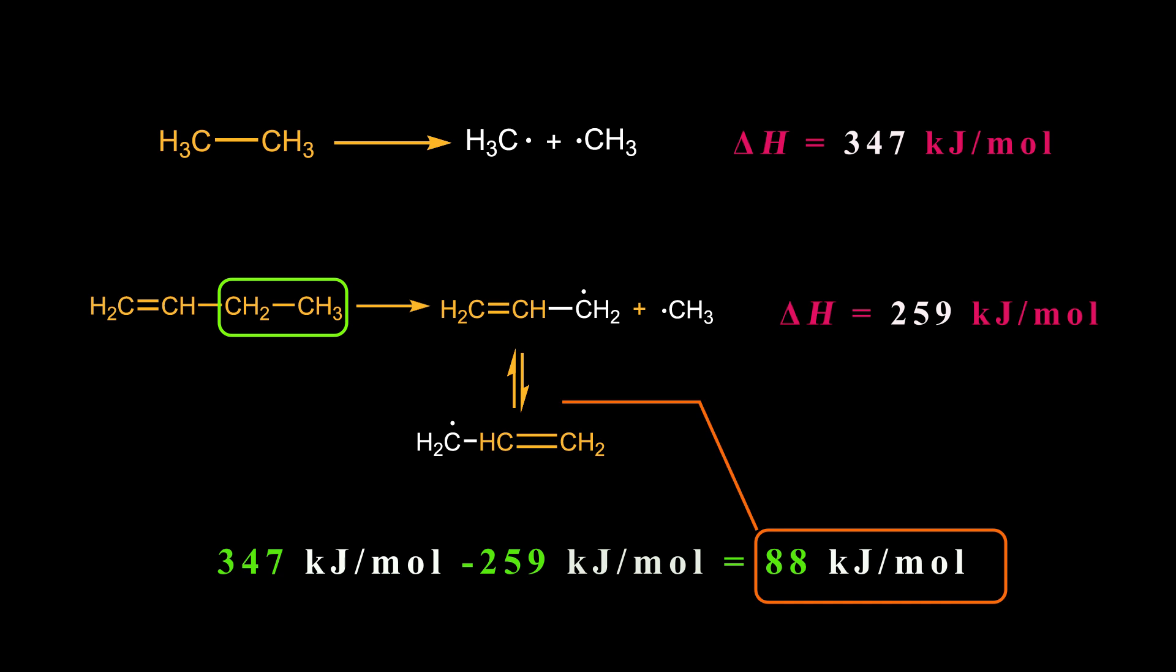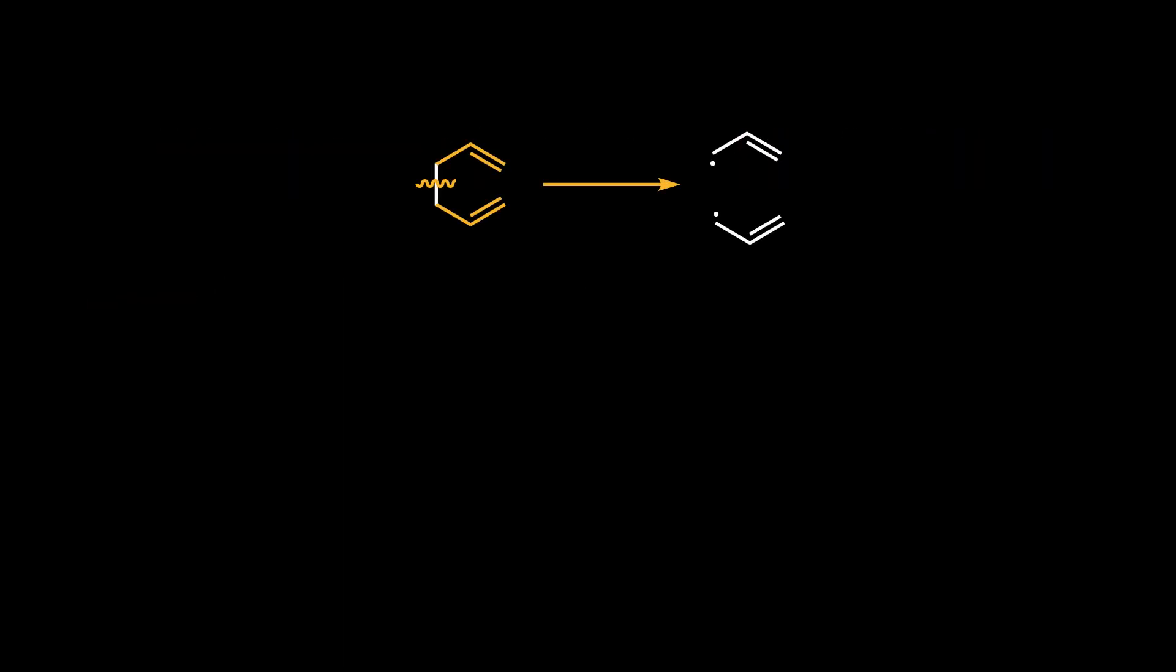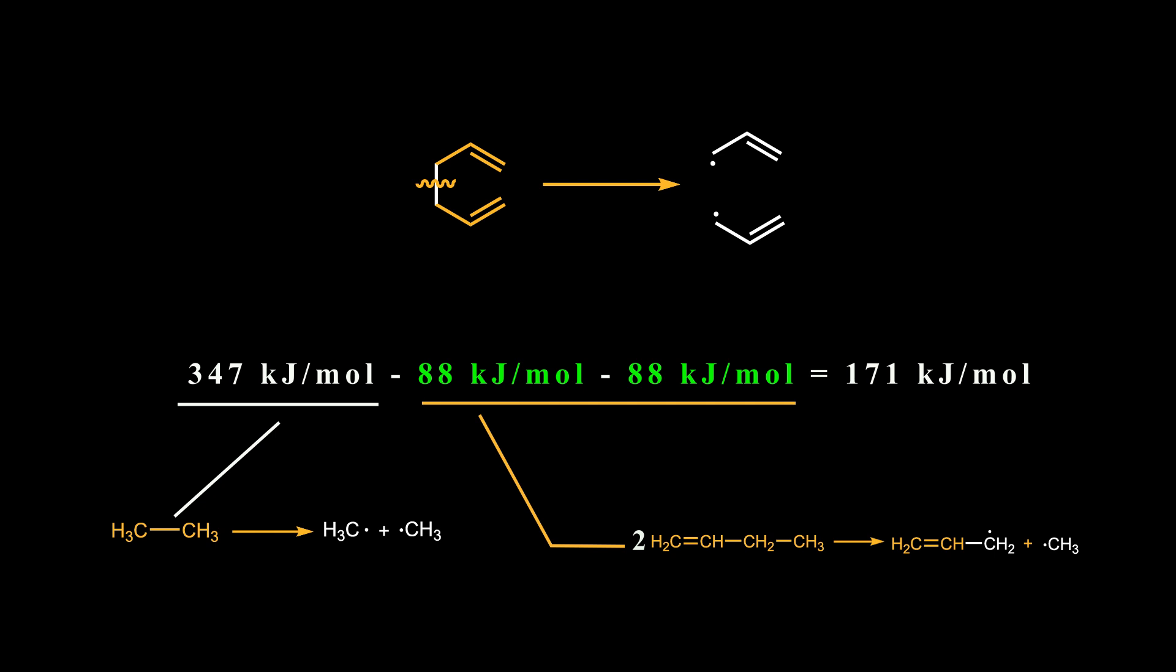Based on this observation, Doering and Roth suggested that the activation energy for breaking the central bond in 1,5-hexadiene would be 171 kJ per mole, as it produces two allylic species.